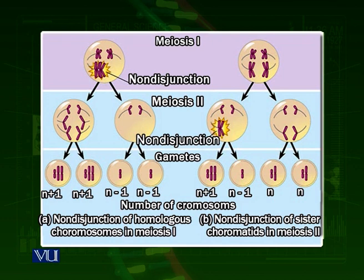...as the diagram on the right shows, when they have to go to the poles, in one of the cells division is normal and the chromosome number is N. But in the other cell which is divided into two, one chromosome with both of its sister chromatids moves towards one pole, and on the other pole there is no chromosome.